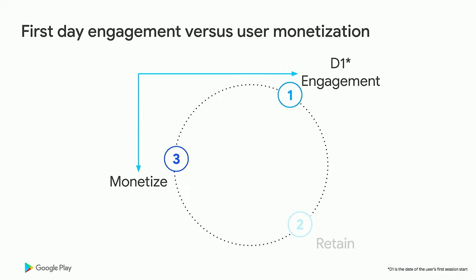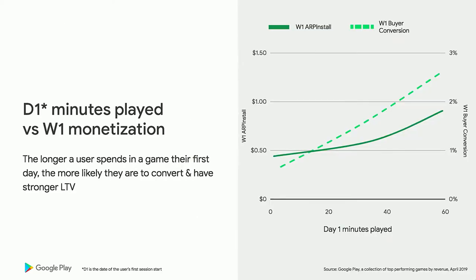The second relationship is the length of time a new player engages on their first day versus how well those users monetize over their first week, focusing on both conversion and lifetime value. Looking at the same top games on Play, we see the length of time on the first day versus two metrics: average revenue per install in the user's first week (the solid line), and the percentage of installs that convert to a buyer by end of their first week (the dotted line). The trend for both: the longer they spend, the more likely they are to convert and drive stronger LTV. Showing players value early is not only driving strong retention but also driving strong future lifetime value.